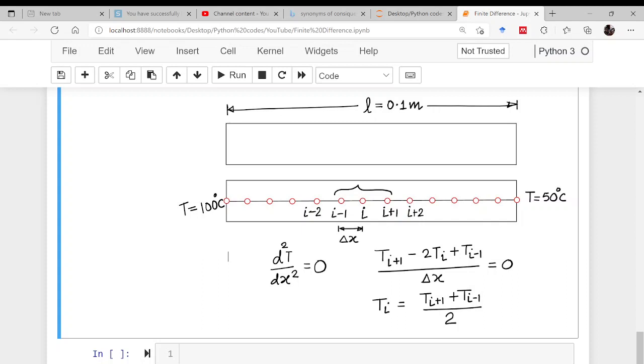We have to develop an array of temperatures along this particular length. And then we will be assuming that initially everywhere temperature is zero except at the left end and the right end. Then we will be solving the equation.